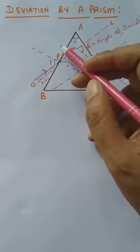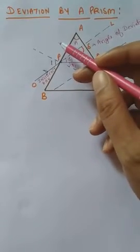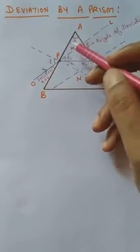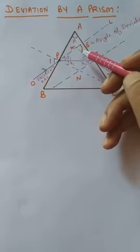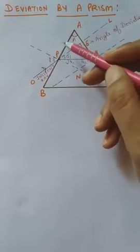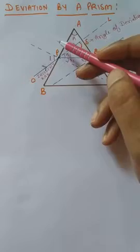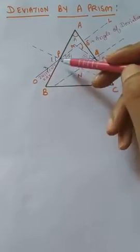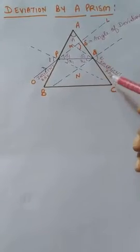...the prism is made of glass and outside the medium is air. So the ray of light is going from air to glass, meaning from a rarer medium to a denser medium. So it will bend towards the normal. If we draw a normal on this surface, ray OP will bend towards the normal and PQ will be the refracted ray.